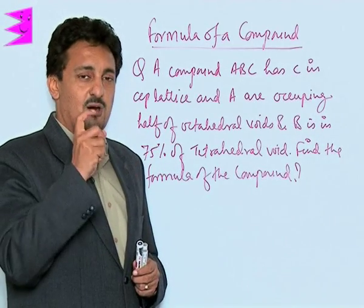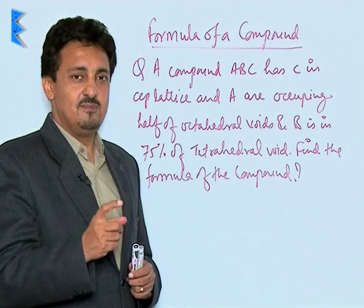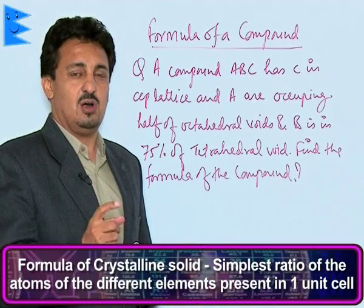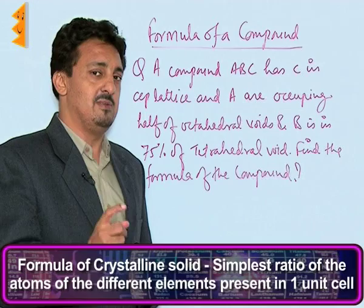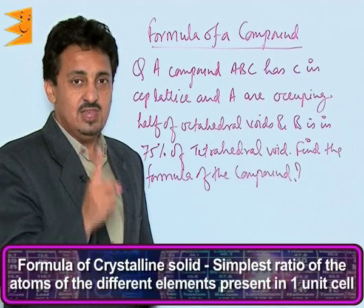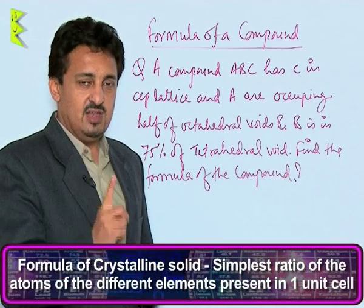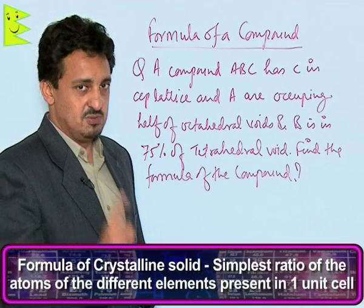So the formula of a crystalline solid is the simplest ratio of the atoms of the different elements present in one unit cell — and that is the most important point.